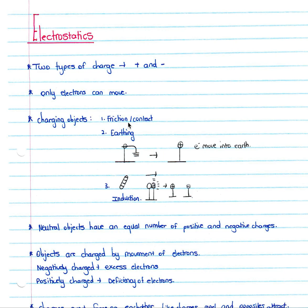We have a number of ways which we can charge objects — meaning we give them either a balance of positive and negative charges, or an excess of negative or positive. The first way is by friction or contact, which will charge an object with either positive or negative charges. We can also earth an object, in which your electrons move into the earth and your object then becomes positively charged. Or by induction, we can force an object to be either positively or negatively charged depending on the charge of the object used in the induction process.